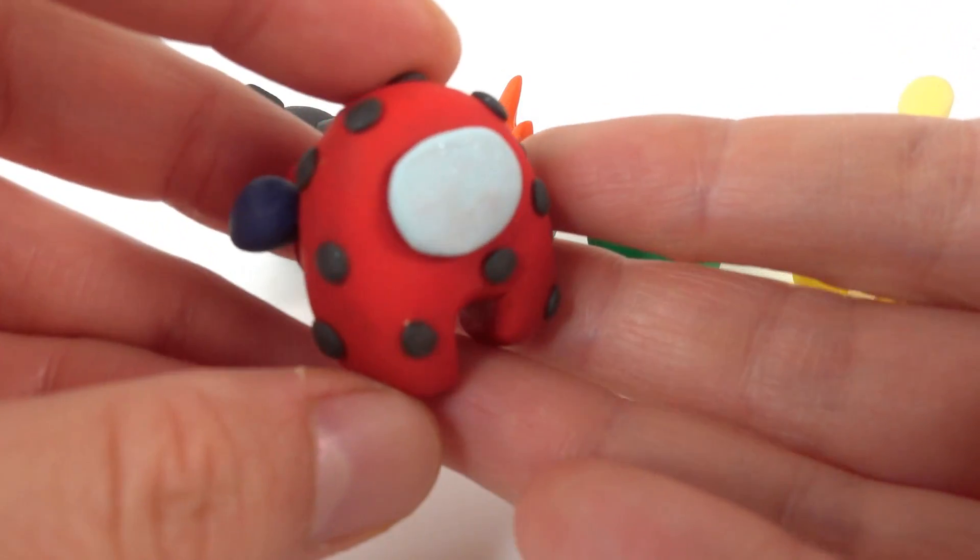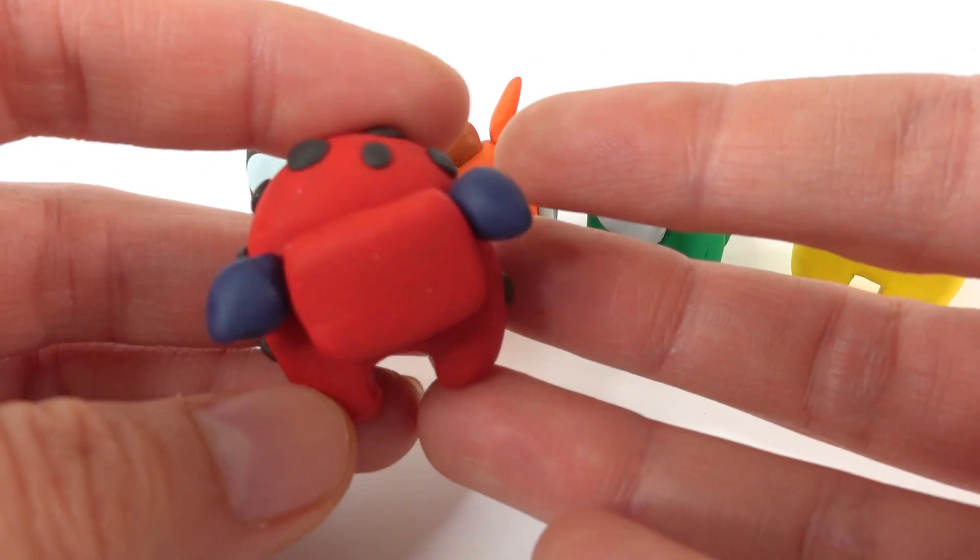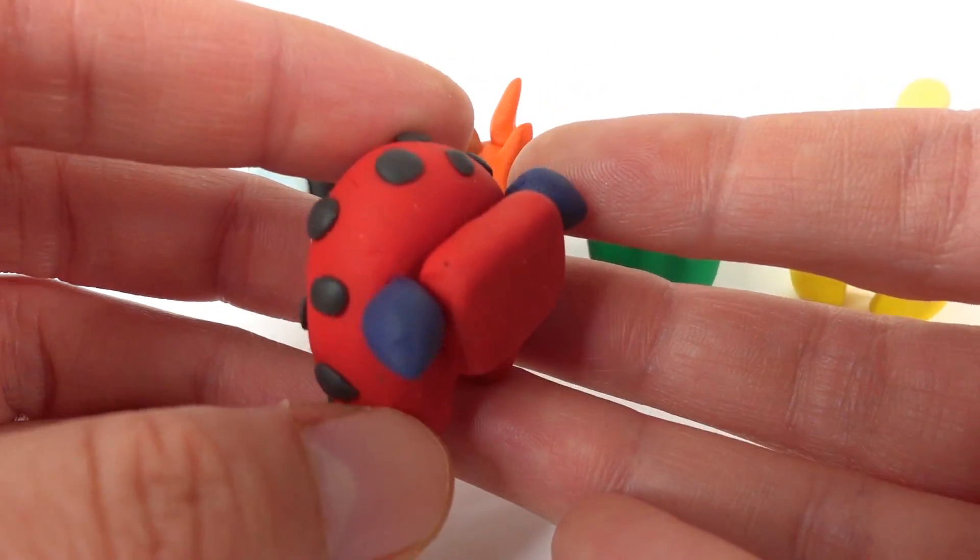So here is Ladybug. She is red with black spots. And here in the back, she has her little oxygen pack and two blue pigtails.